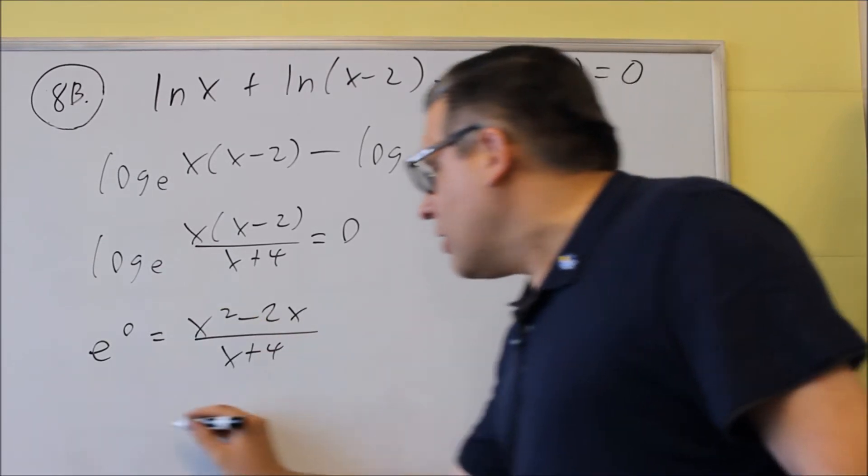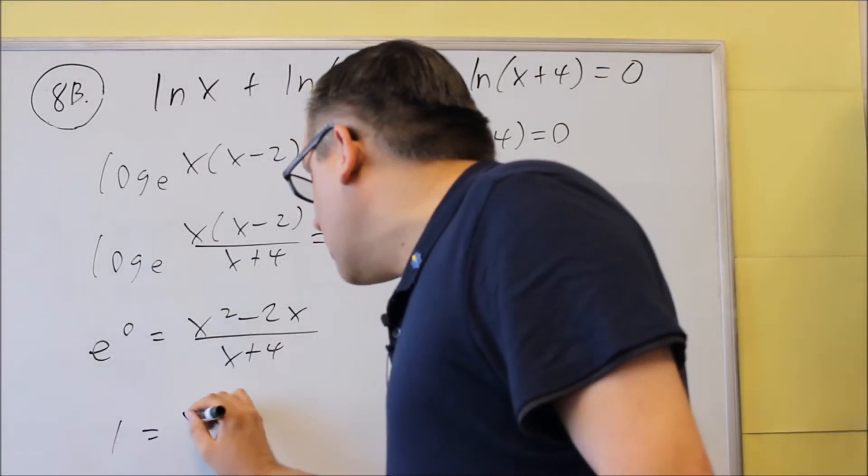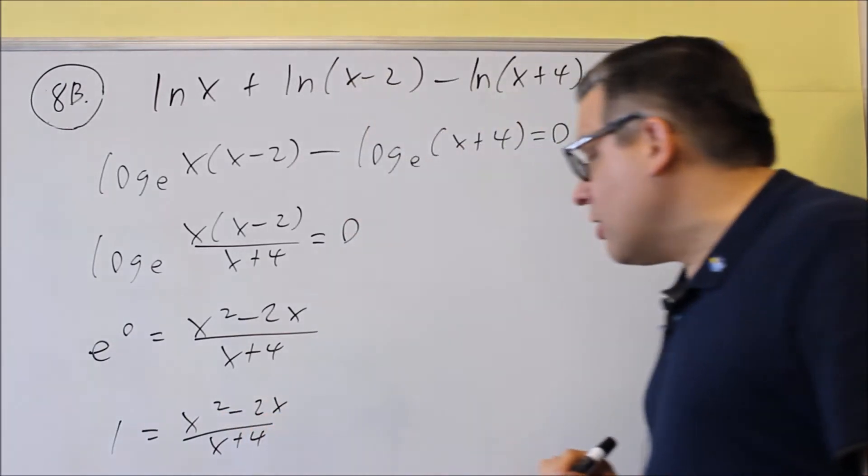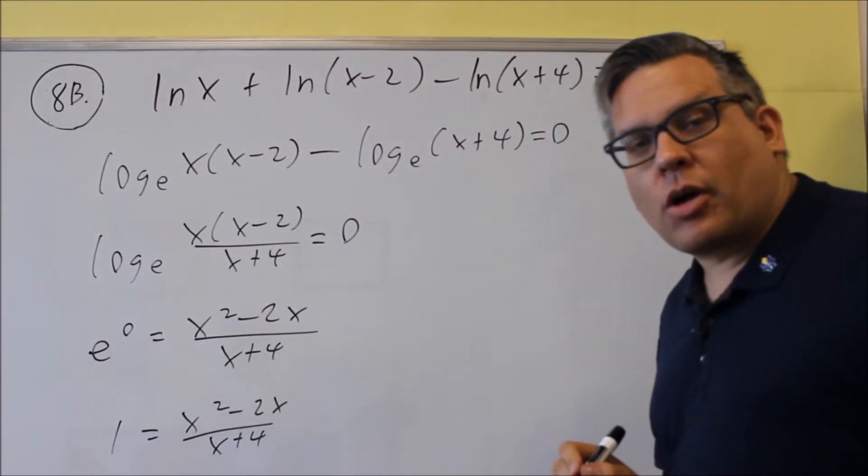Now what is e to the 0? e to the 0 is 1. In fact, anything to the 0 power is equal to 1. So that's where that one comes from.